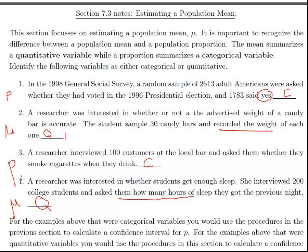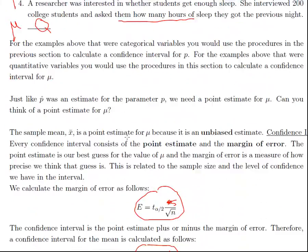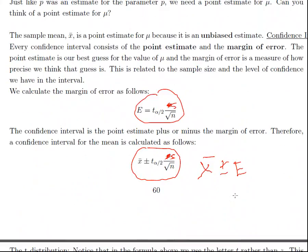Hey everyone, we're going to pick up where we left off in section 7.3. Section 7.3 is similar to 7.2, but we're applying our confidence interval to the population mean, so we need to recognize the difference between that and the proportion, which we went over in the last video.